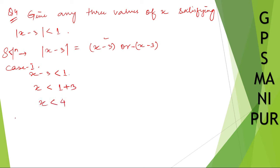Now let us take case 2: -(x - 3) < 1. Multiplying out the negative sign, minus x plus 3 < 1.